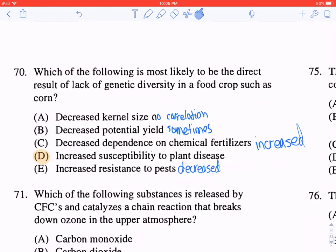Question 70: Which of the following is most likely to be the direct result of lack of genetic diversity in a food crop such as corn? It wouldn't be A, because decreased kernel size has no correlation. It wouldn't be B, because decreased potential yield only happens sometimes. It wouldn't be C, decreased dependence on chemical fertilizers, since it should be increased dependence. And it wouldn't be E, since it should be decreased resistance to pests. So the best answer here is increased susceptibility to plant disease, D.